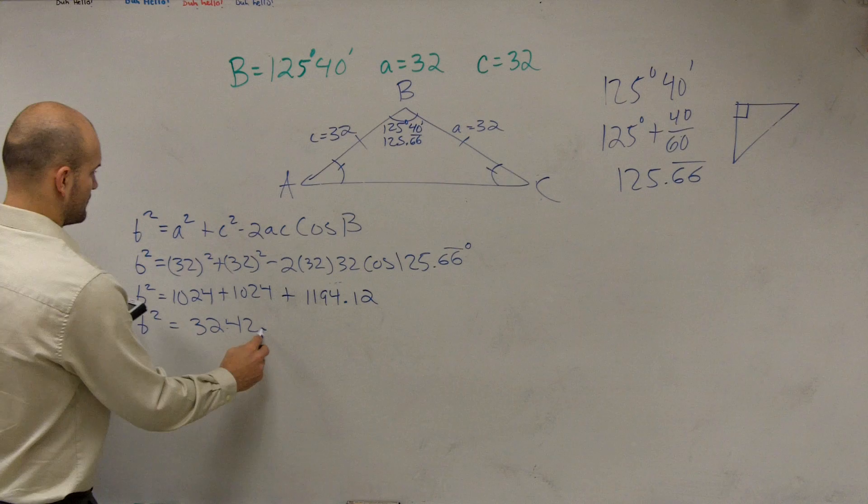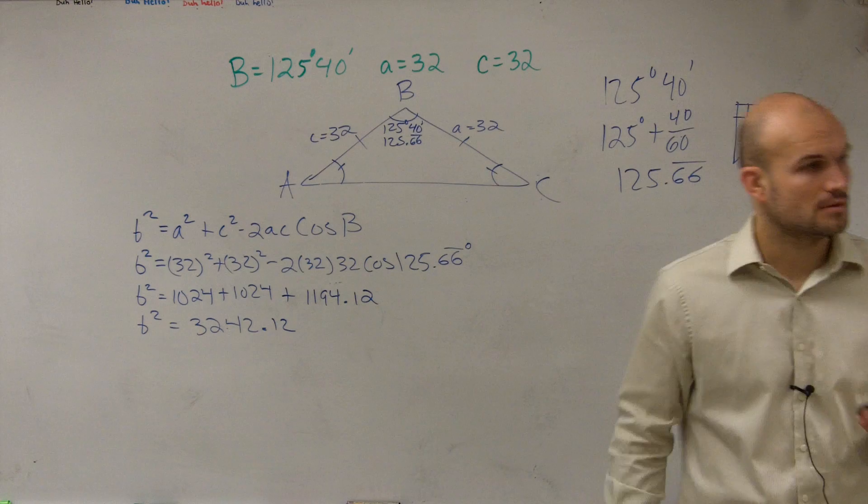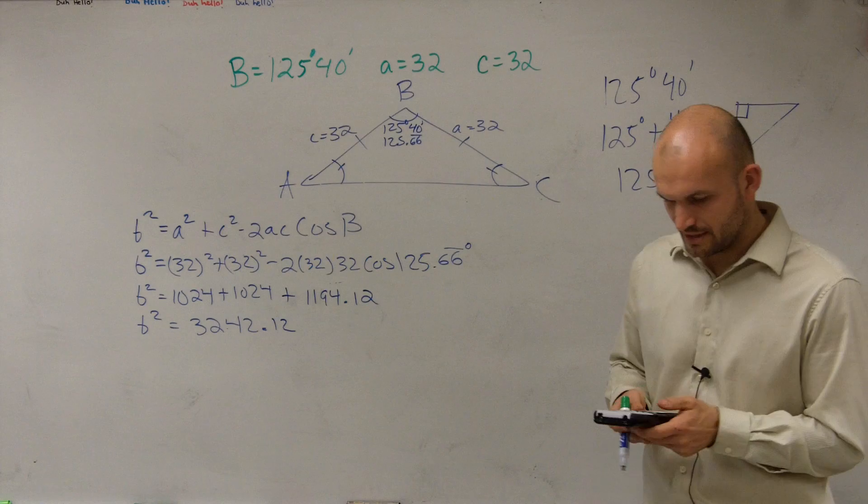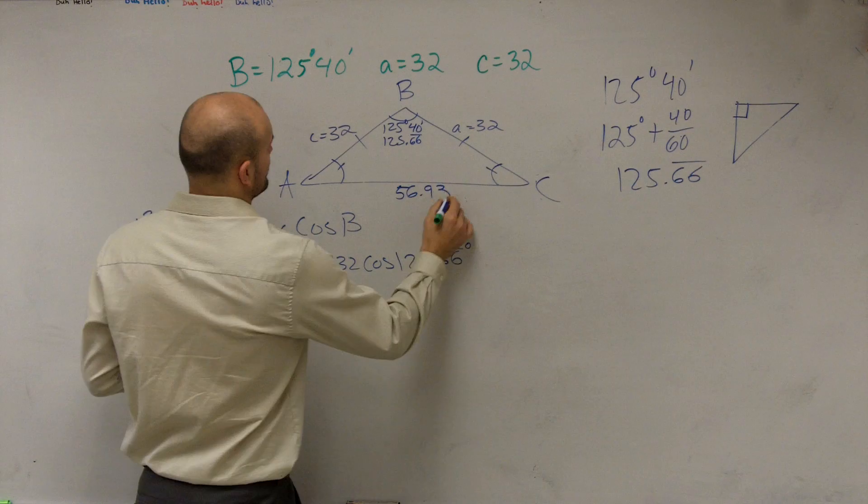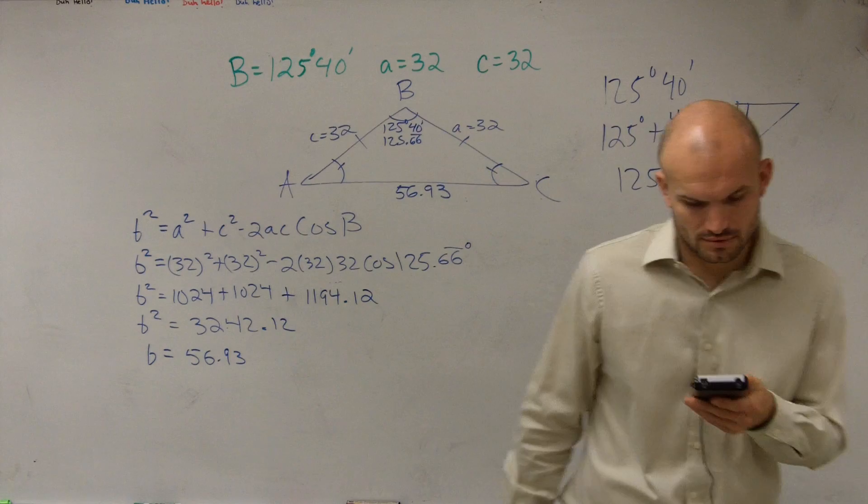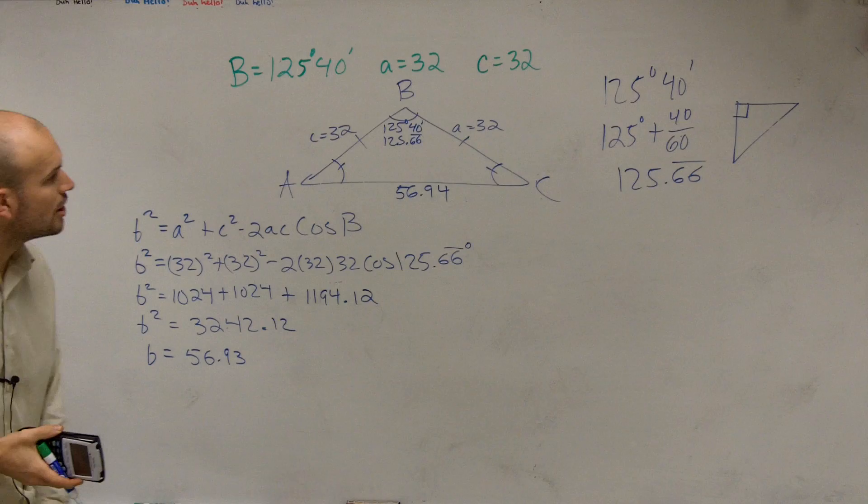b squared equals 3,242.12. And then we can take the square root of that answer and we get 56.93. So I can say now this is going to be 56.93. And that. Yes, it is 94. Thank you. I didn't even look at it. So then you could round it up to 0.94.